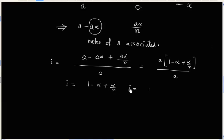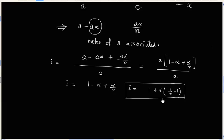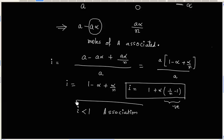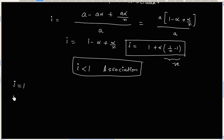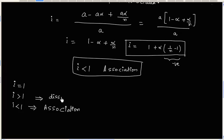We can also write this as i = 1 + α(1/N − 1). Since N is always greater than 1, the term (1/N − 1) is negative, making i less than 1 for association. So we have three situations: when i = 1, there is neither dissociation nor association; when i > 1, we have dissociation; and when i < 1, we have association.